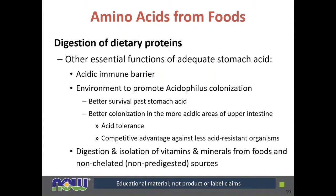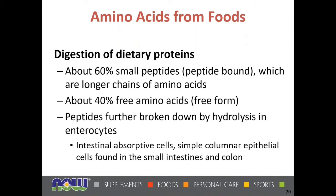Other essential functions of adequate stomach acid include serving as an acidic immune barrier to help keep pathogens from entering the body. It also provides an environment to promote acidophilus colonization — acidophilus literally means acid-loving — so proper probiotic bacteria are selected by nature to colonize in that kind of environment. The acid in the stomach also aids digestion and the isolation of vitamins and minerals from foods in non-chelated, non-predigested sources.